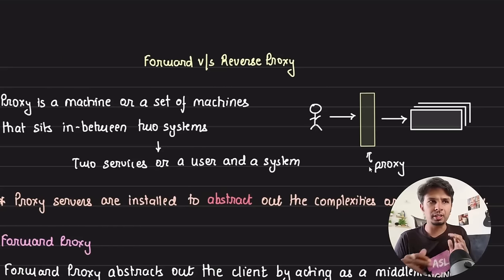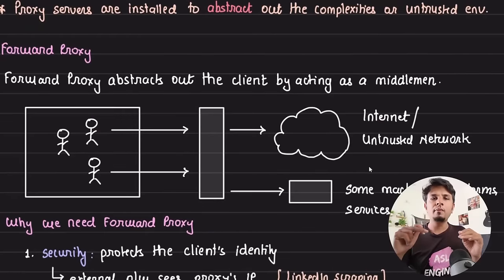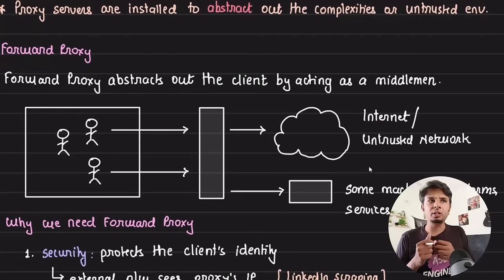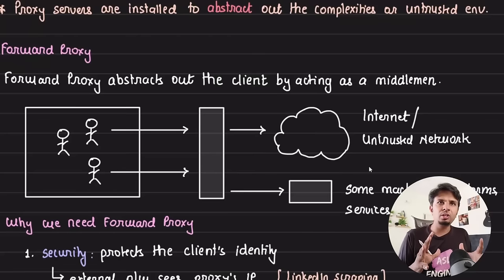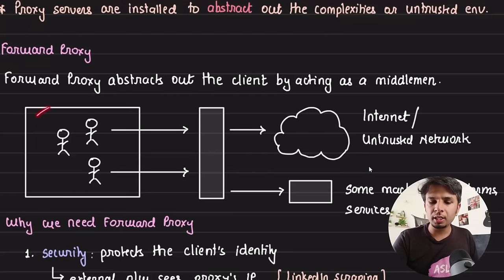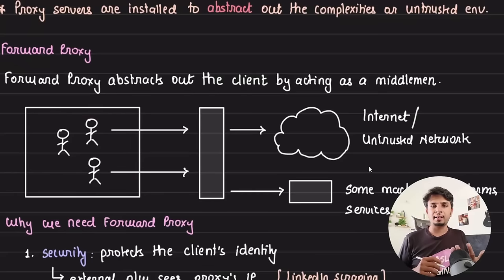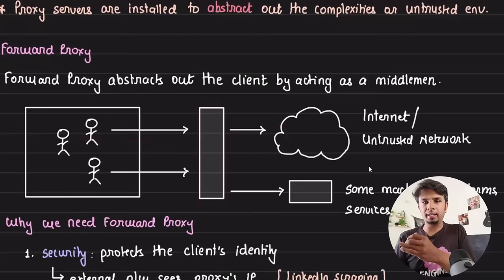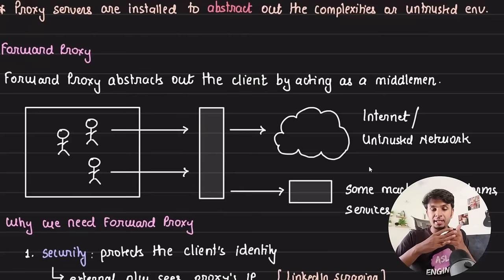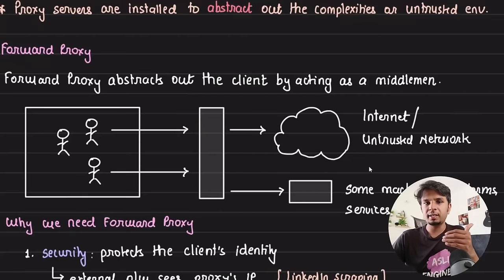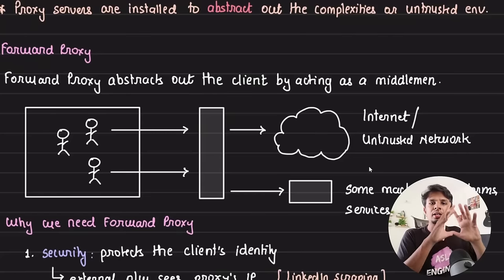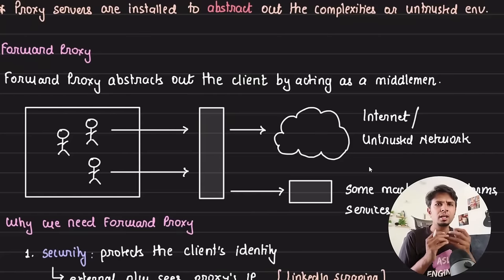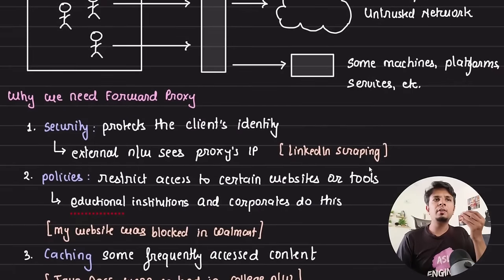The first kind of proxy is a forward proxy, which is basically what we have all experienced in our colleges and workplaces. It abstracts out the clients — the users — by acting as a middleman, protecting the identity of the client. When a client makes a call, the request goes via this proxy to the internet or to some server. The forward proxy forwards the request, gets the response, and abstracts out the client.